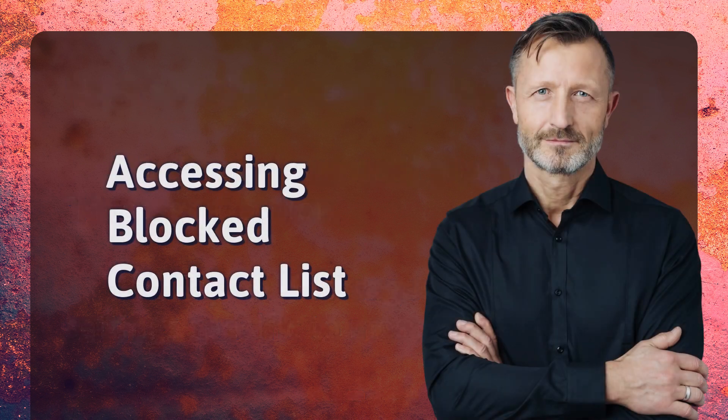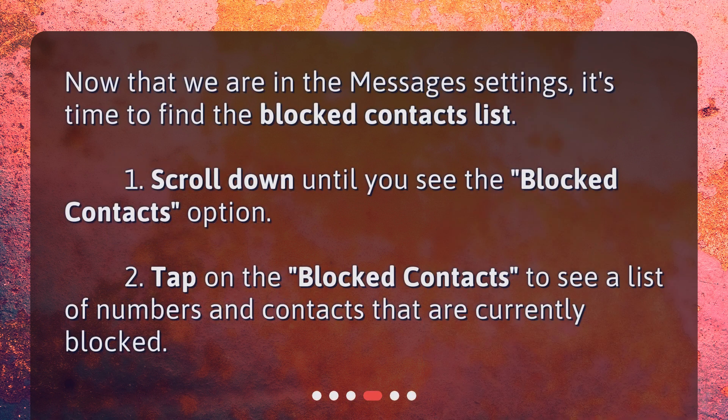Accessing blocked contact list. Now that we are in the Messages settings, it's time to find the Blocked Contacts list. Scroll down until you see the Blocked Contacts option. Tap on Blocked Contacts to see a list of numbers and contacts that are currently blocked.